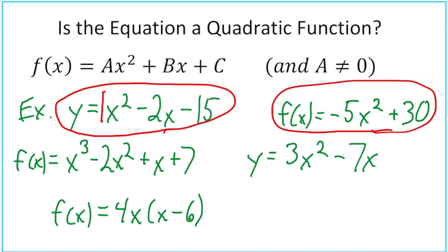Next up: f(x) = x³ - 2x² + x + 7. It does have our ax², our bx, and our c, but it has this x³ here. Therefore, this is not quadratic.